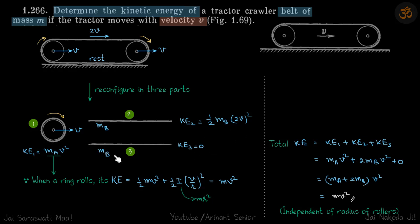Let's add them to find the total kinetic energy. KE₁ + KE₂ + KE₃: KE₁ equals mₐv², KE₂ becomes 2mᵦv², and KE₃ is zero. So this becomes (mₐ + 2mᵦ)v². Since mₐ + 2mᵦ covers the whole belt...